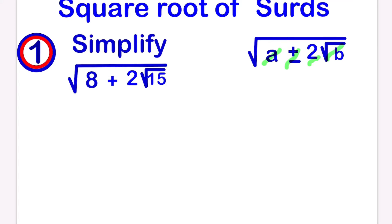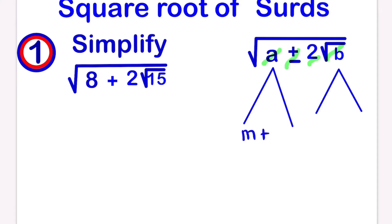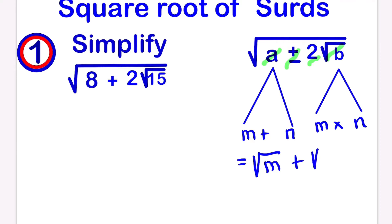The most easiest method. For a, we have to think of two numbers that when we add them together it will give us a, and when we multiply the same two numbers together it will give us b. If you have those two numbers, then your answer will be the square root of m plus the square root of n.